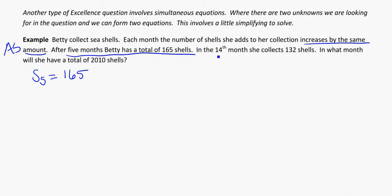And on the 14th month, she collects 132 shells. So the 14th month, she collects that many shells. That's not the sum anymore. That's actually my T value for 14, which is going to be 132. And they want to know, in what month will she have a total of 2010 shells? So what we're looking for is, in what month do I have this?